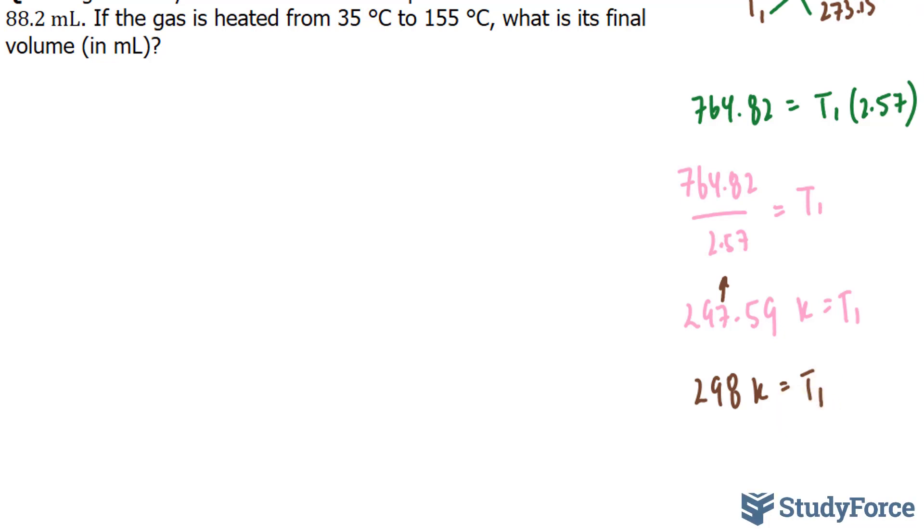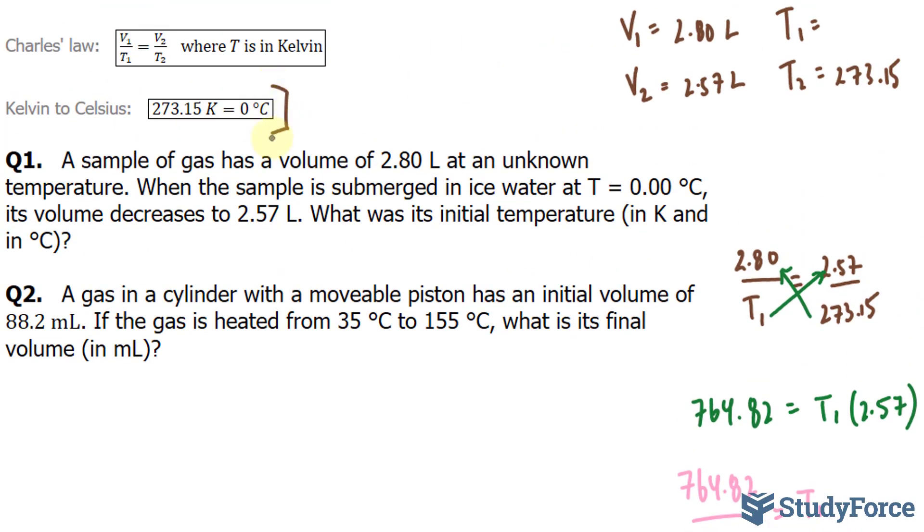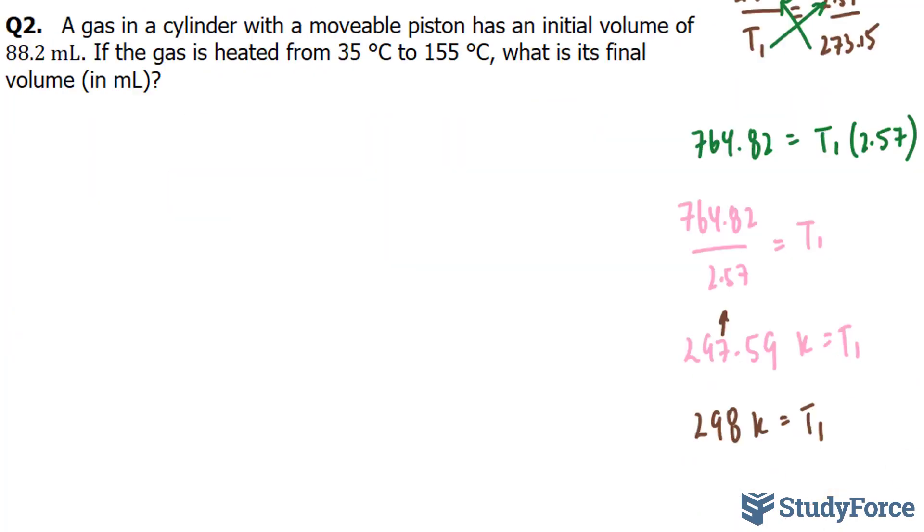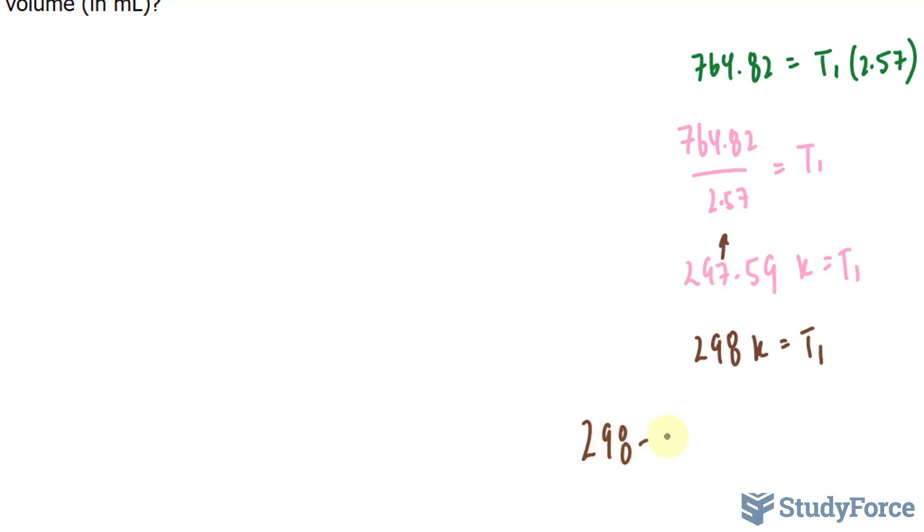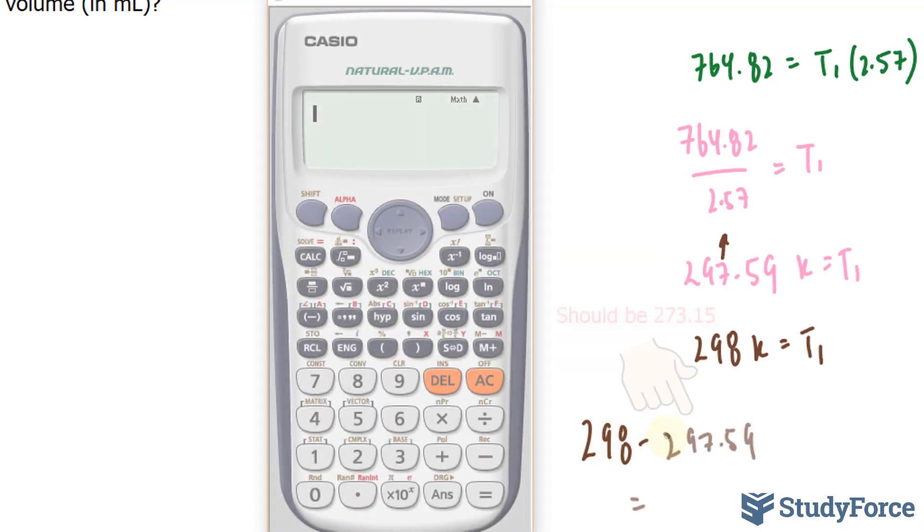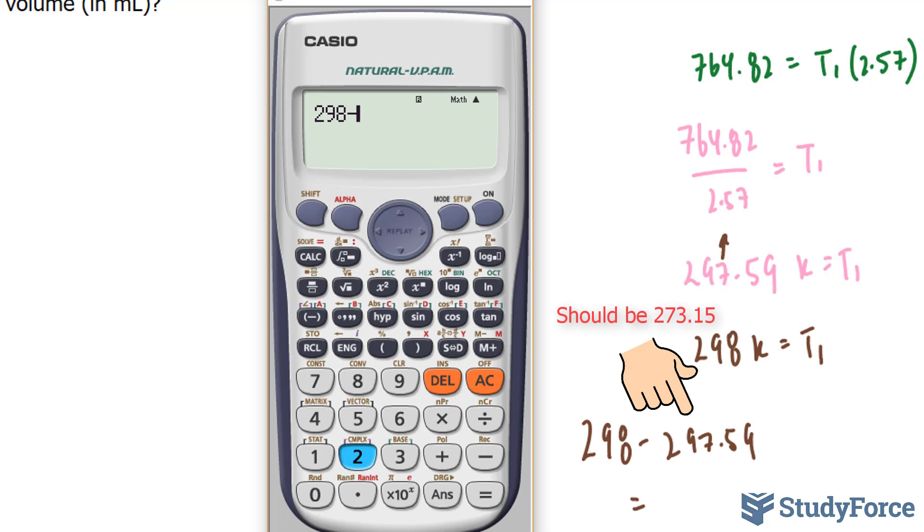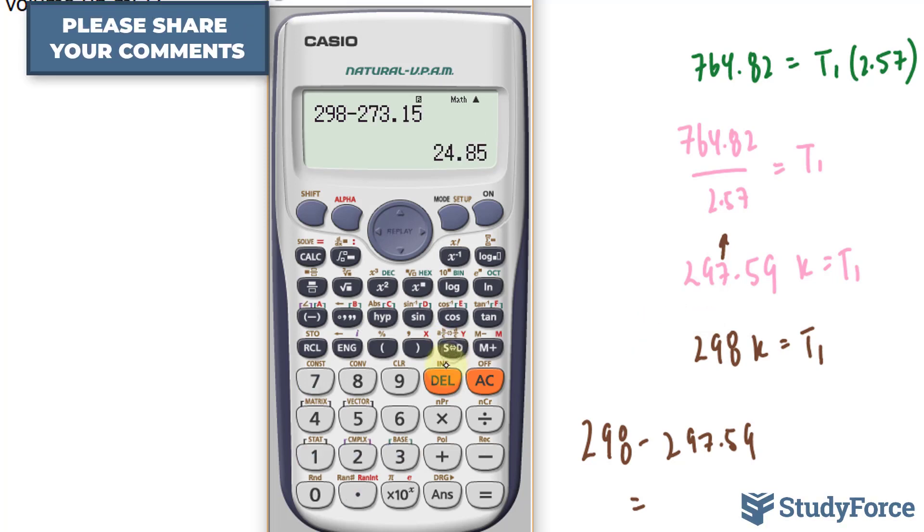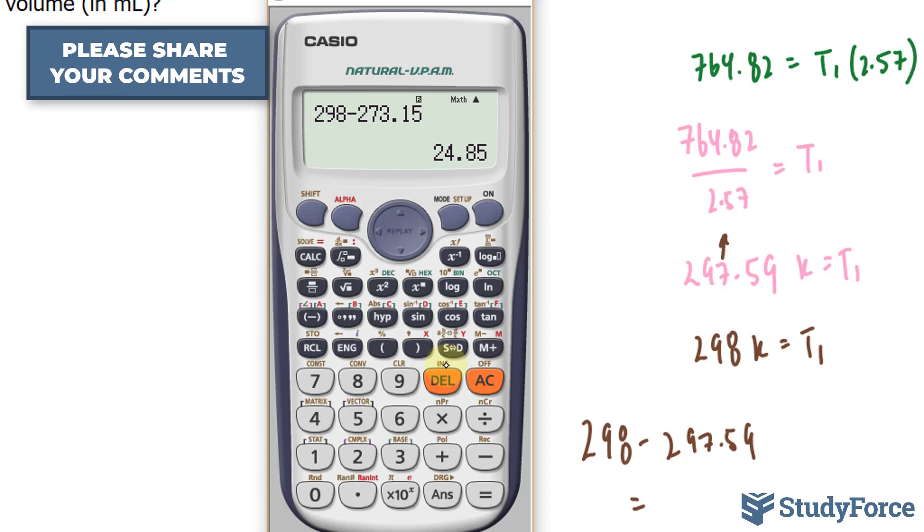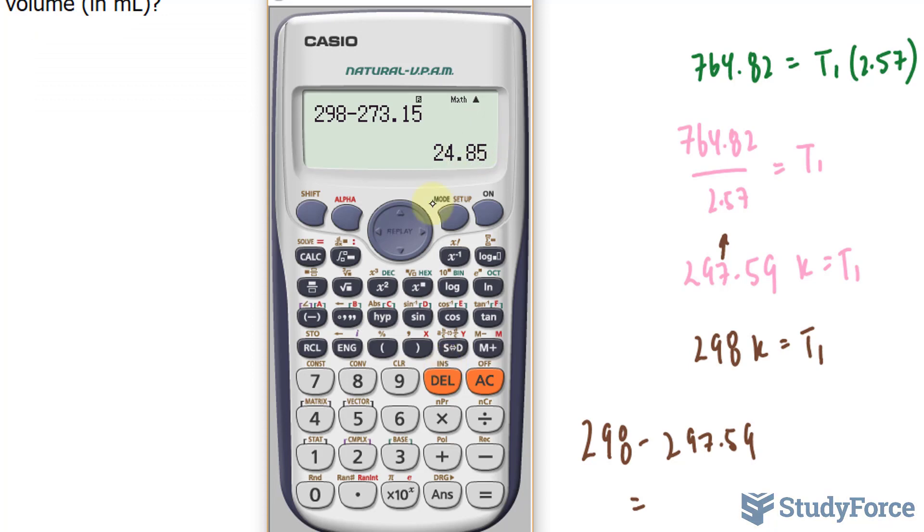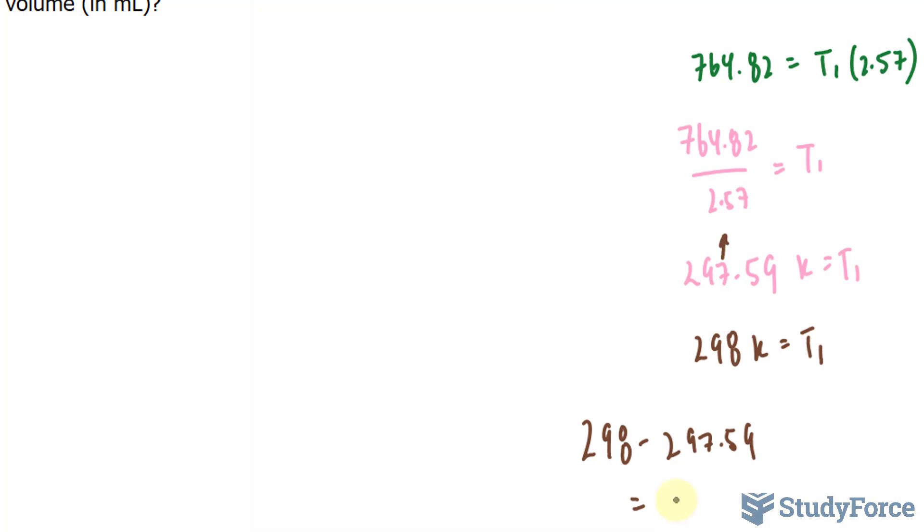They also want this in Celsius. And for that, we'll use this conversion, where at 0 Celsius, it's 273.15. So, I'll take this number, 298, and subtract it from 273.15. So, taking 298 minus 273.15 gives us 24.85, and since we are subtracting, adding and subtracting significant figures, you only take into account the number of digits after the decimal place. Since 298 didn't have any numbers after its decimal place, and Kelvin is an exact number, then our final answer is just 24, and that's in Celsius.